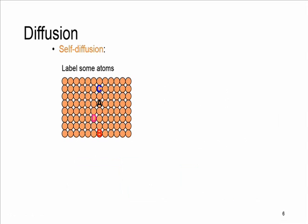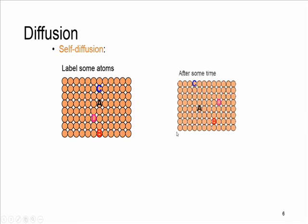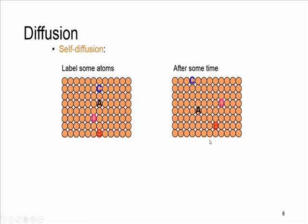This process is also observed in elemental solids. Even in solids that have one type of element, atoms also migrate. If we label some atoms as shown here, after some time we see that they have been displaced.